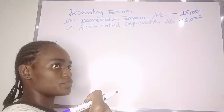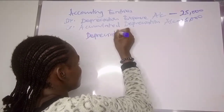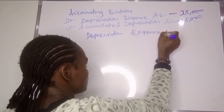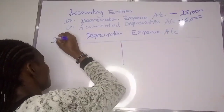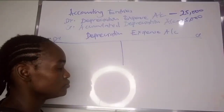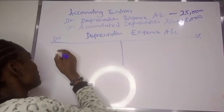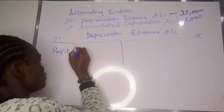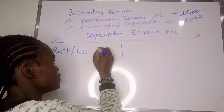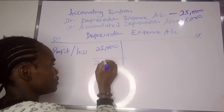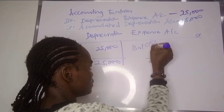In case they ask for a T-account, you prepare the depreciation expense account with a debit side and a credit side. On the debit side, since depreciation is treated as an expense in profit or loss, we write profit or loss $25,000. On the credit side, $25,000. Balance carried down $25,000.